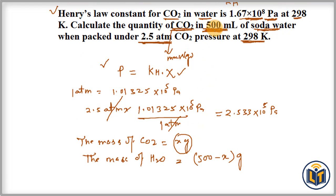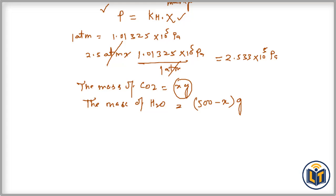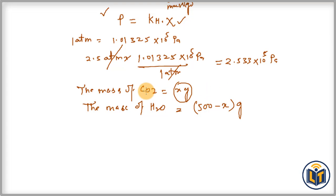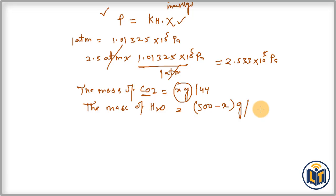The volume of soda water is 500 ml and the density of water is 1.0 g/ml, giving a total mass of 500 grams. We convert mass to moles by dividing by molar mass: molar mass of CO₂ is 44 g/mol and molar mass of water is 18 g/mol. We can now plug in the values to find x.